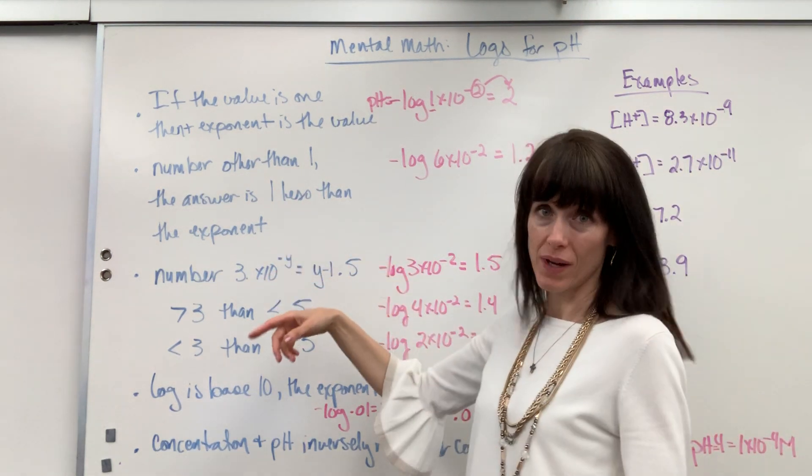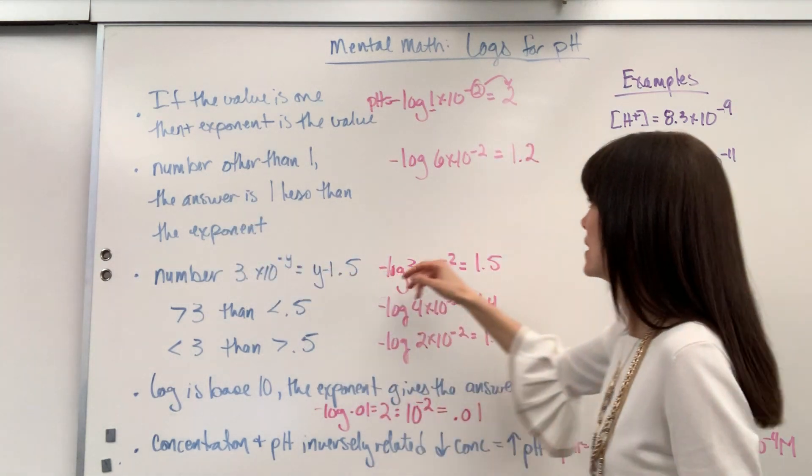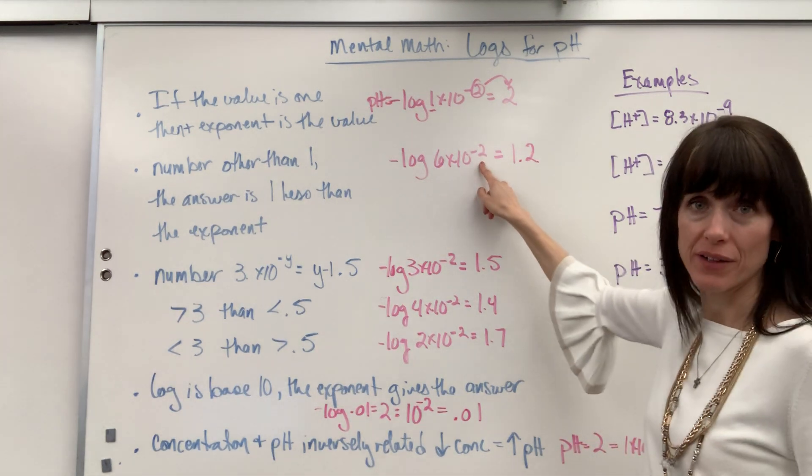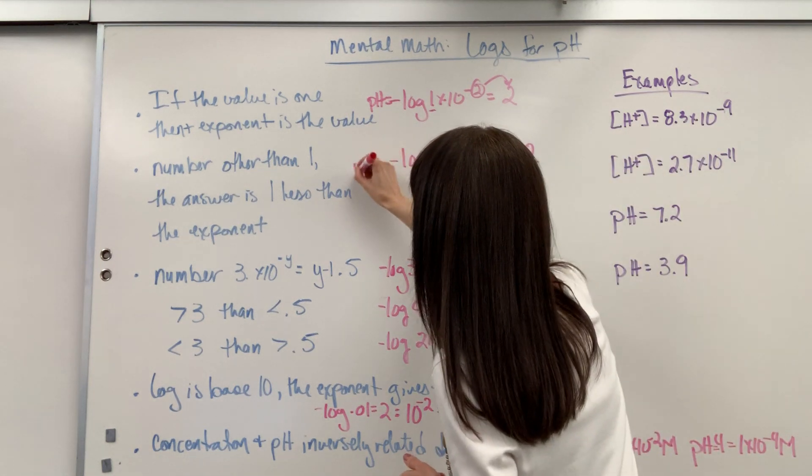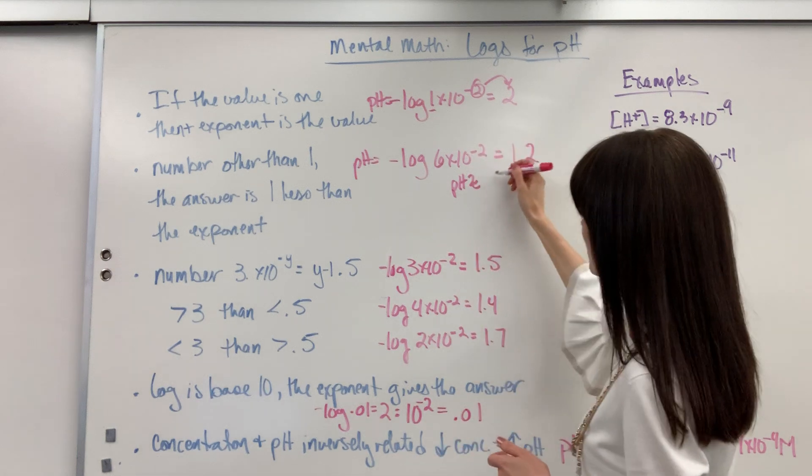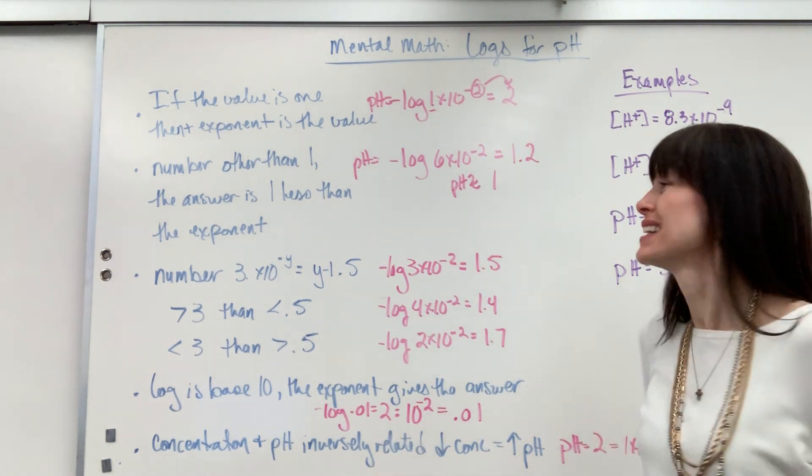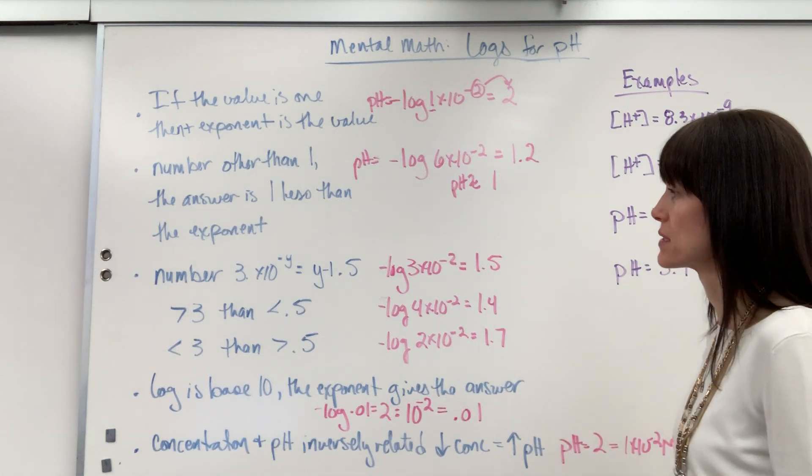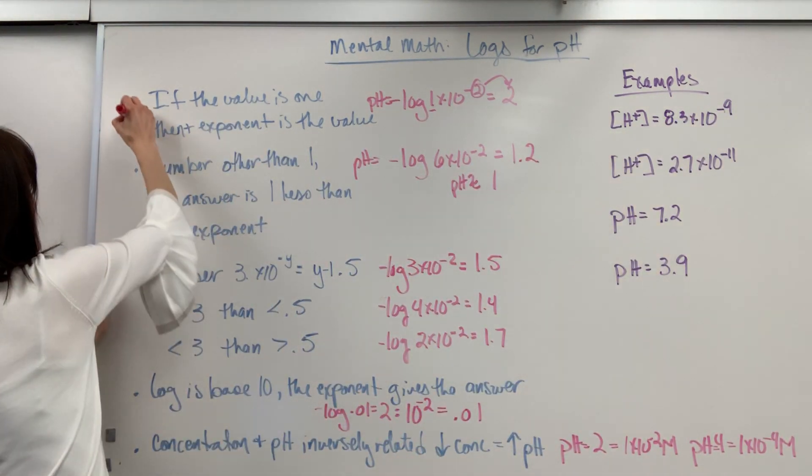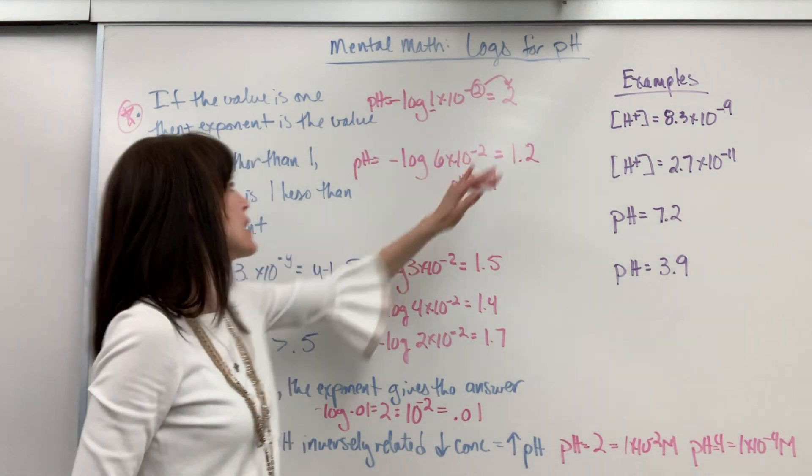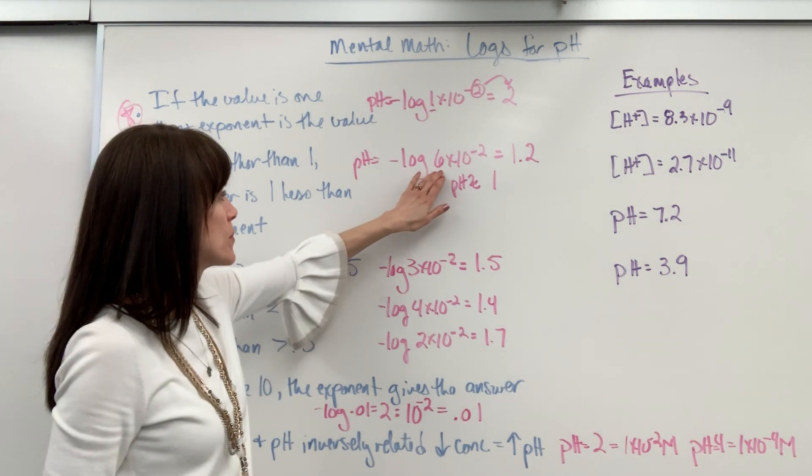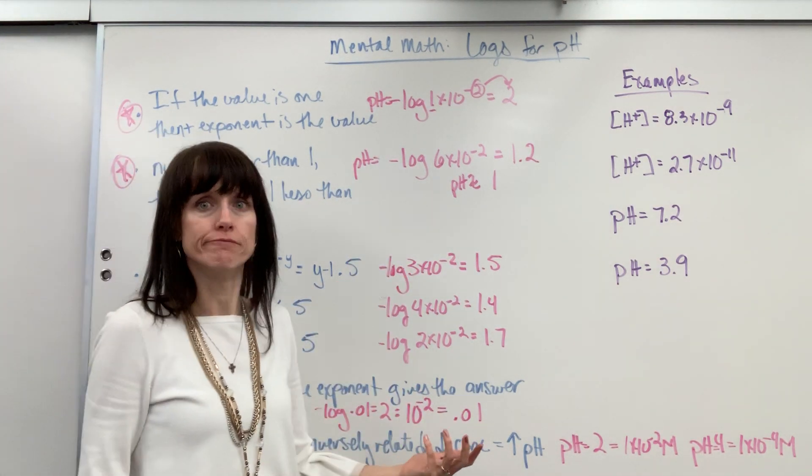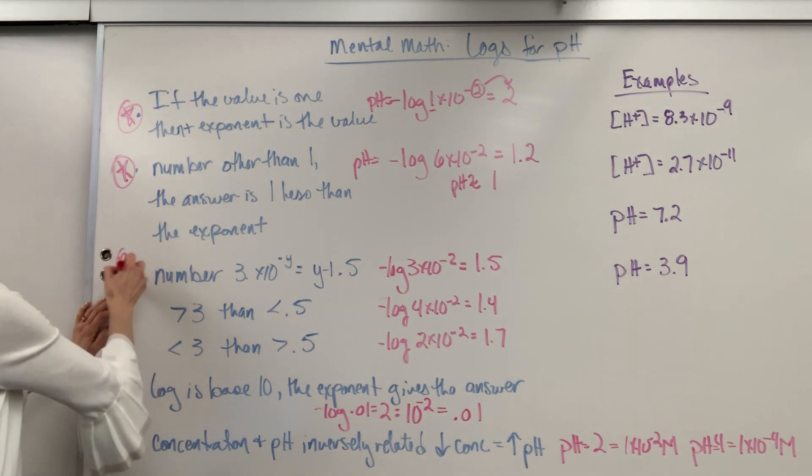Now, if the number is other than 1, the answer is 1 less than the exponent. So I have a number here. If you have any number other than 1, I have a 6 right here, what you do is you just subtract 1 from this. So at the very least, I could say this. So here's pH. I would say pH is approximately 1. You just go 1 less than the exponent, done. You can say, oh, it's about a pH of 1, somewhere right in there.